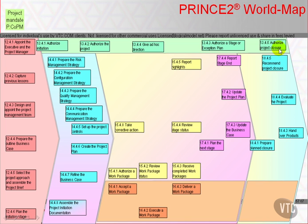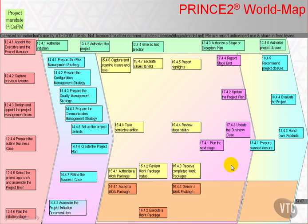Then the project board authorises that project closure. If we have issues, we capture and examine the issues, and where appropriate escalate issues and risks to the project board in order that they can give ad hoc direction. Finally, capturing an issue or risk may result in the need to produce an exception plan, or other causes may lead to preparing premature closure.